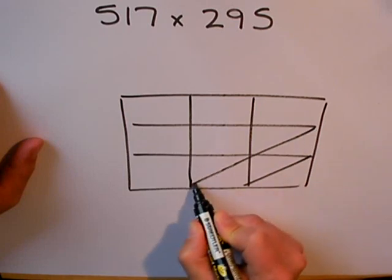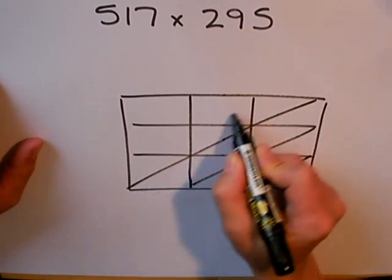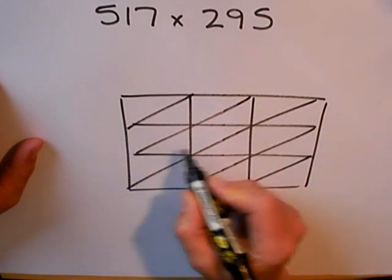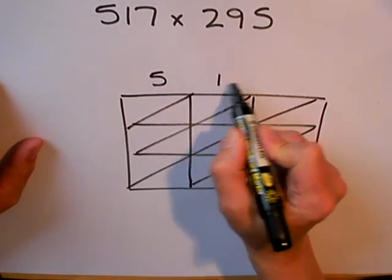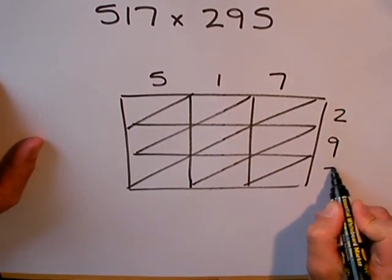Drawing in my diagonals, I'm going to use for later. I have 517 multiplied by 295.